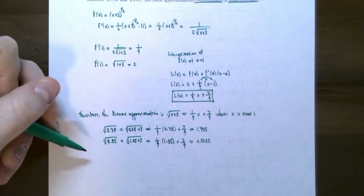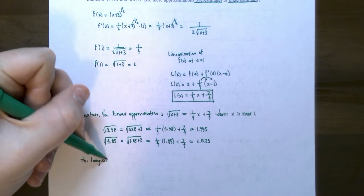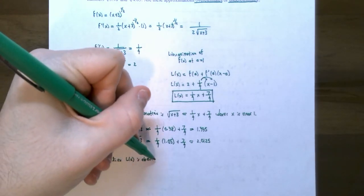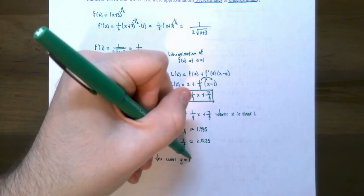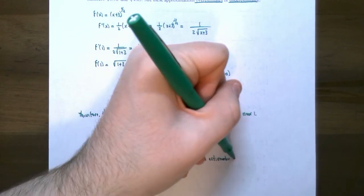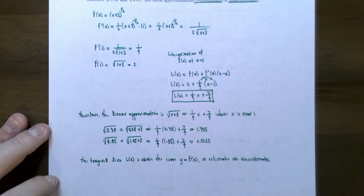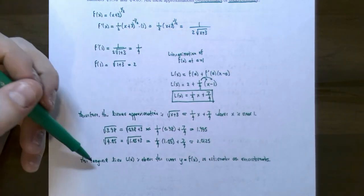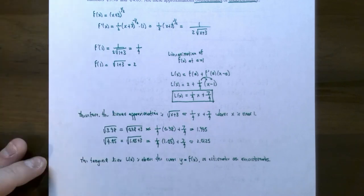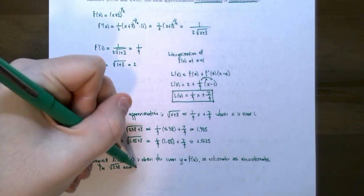Now to answer the last part: are these approximations overestimates or underestimates? The tangent line L of x is above the curve y equals f of x, so the estimates are overestimates. The reason is that the linear approximation uses the tangent line. If the tangent line is above the curve, then those y values will be greater than the actual y values. So the estimates we came up with will be overestimates for the square root of 3.98 and the square root of 4.05.